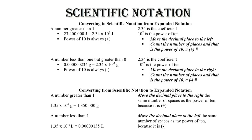This video will cover scientific notation. In chemistry, we tend to have numbers that are either really, really large or really, really small. And instead of writing numbers with lots of zeros, we use scientific notation.